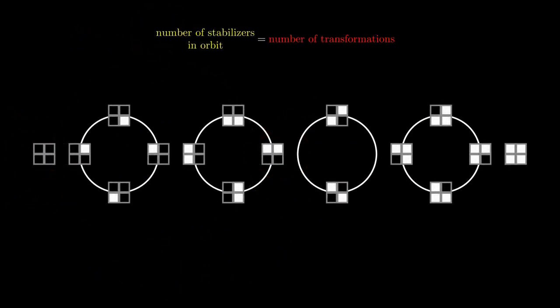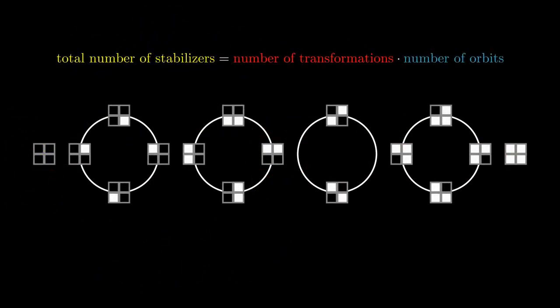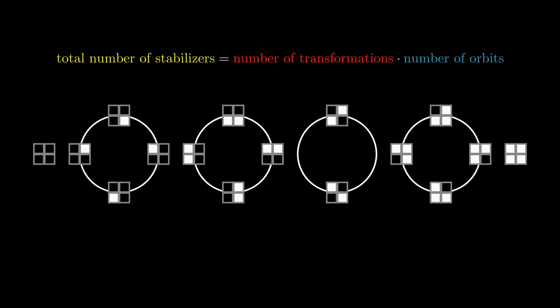And if we add up the number of stabilizers over every coloring in every orbit, we'll get the number of orbits times the number of transformations. Because we know the number of transformations, and we want to find the number of orbits, this is very useful.